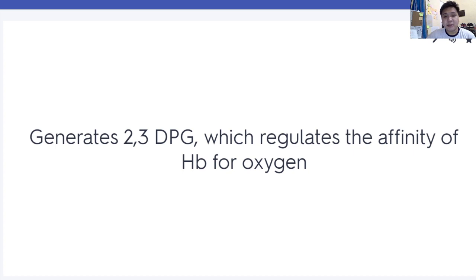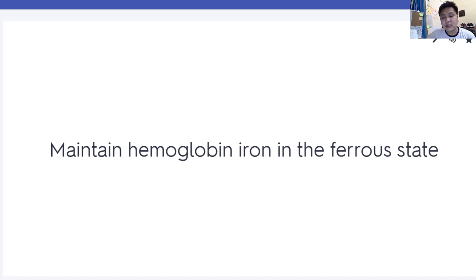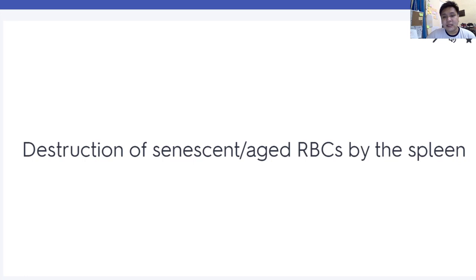Remember: increased 2,3-DPG causes a shift to the right. Methemoglobin reductase maintains hemoglobin iron in the ferrous state. Methemoglobin contains iron in the ferric state — we need iron in the ferrous state because that is the iron found in normal hemoglobin. Culling is the destruction of aged RBCs by the spleen — differentiated from pitting.